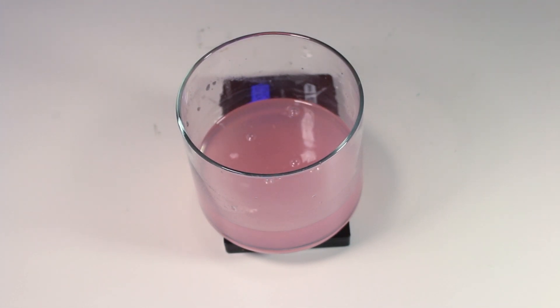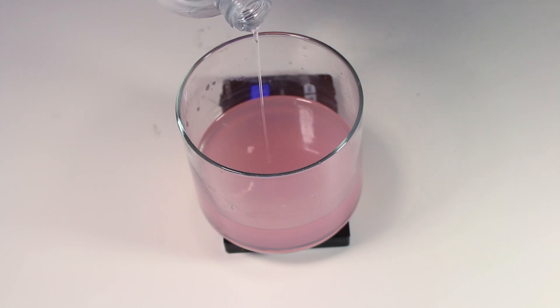Next in, we're going to add a generous portion of glycerin. Glycerin is a humectant, which means it helps your skin to retain moisture, but it's also an emollient. So it's going to help to soften your skin as well. It can also help to speed up healing for any nicks or cuts that you might get while shaving. So it's really nice stuff.